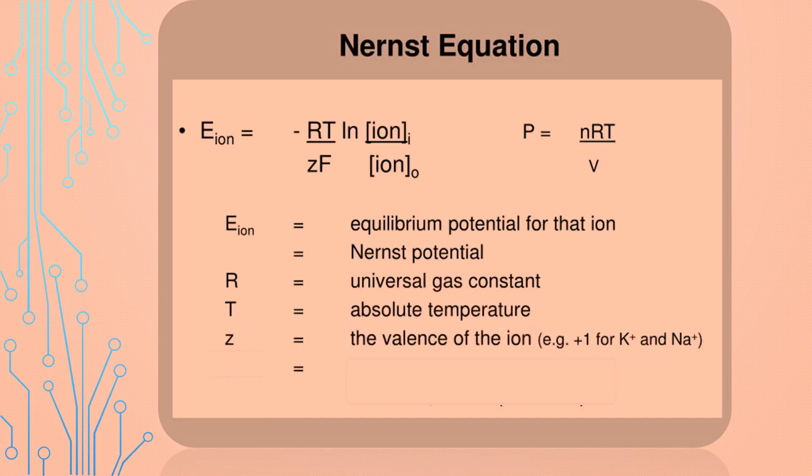For example, sodium and potassium ions are positive 1. F represents Faraday's constant, which equals 96,500 joules per volt times mole. And finally, Ln represents the natural logarithm of ion in over ion out.